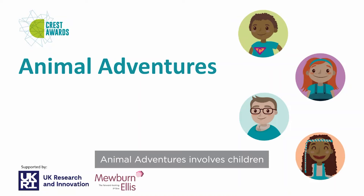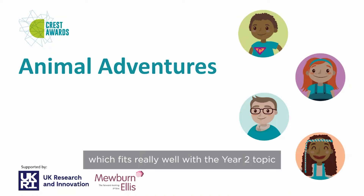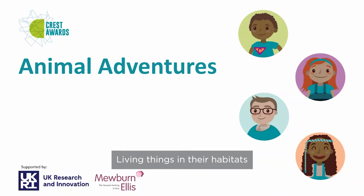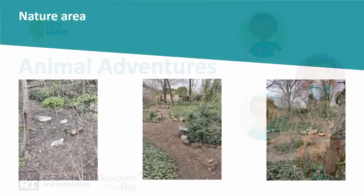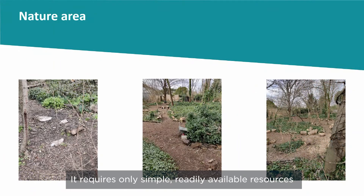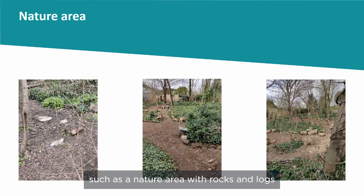Animal Adventures involves children going on a mini-beast hunt, which fits really well with the Year 2 topic Living Things in Their Habitats. It requires only simple, readily available resources and a suitable space for the children to look for mini-beasts in, such as a nature area with rocks and logs to lift and look beneath and soil to dig in.